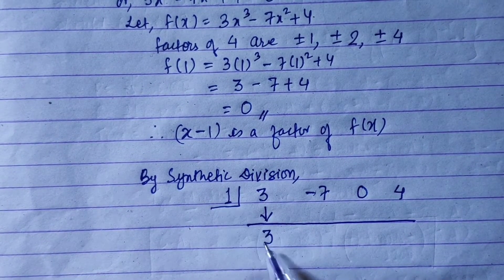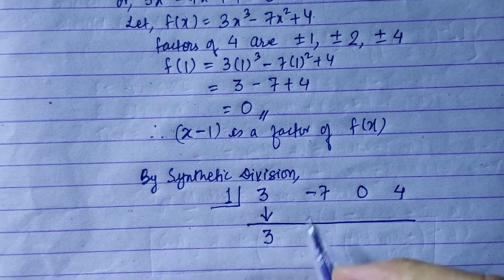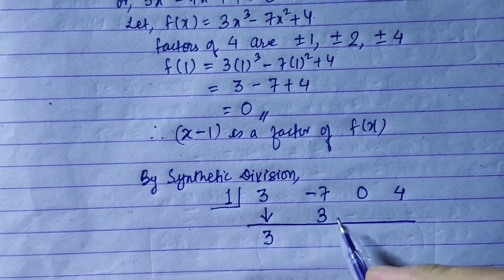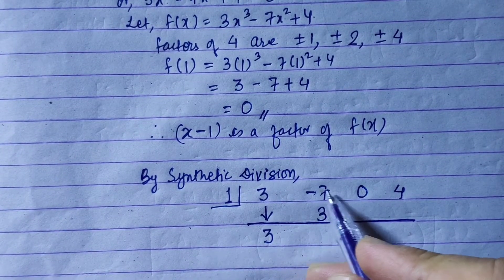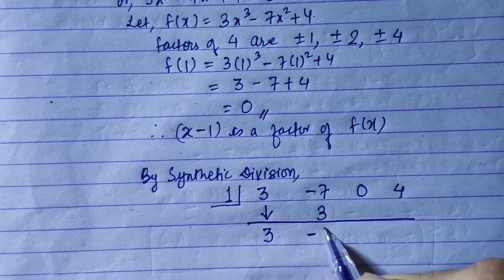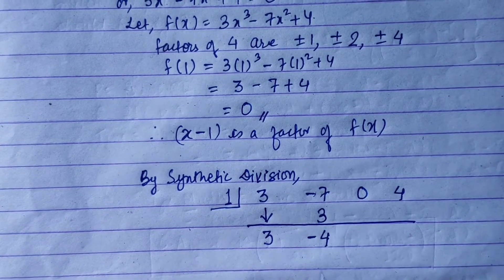Starting synthetic division: bring down 3. Multiply 1 × 3 = 3. Then -7 + 3 = -4.